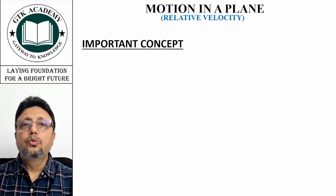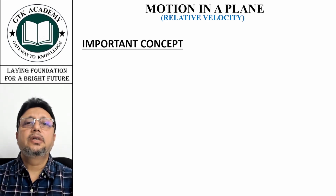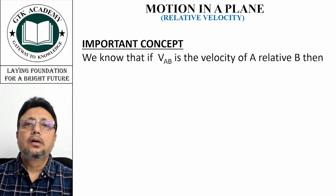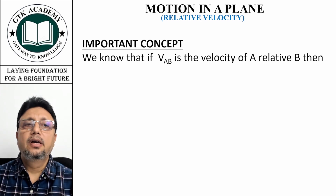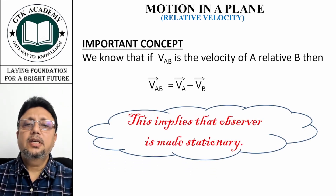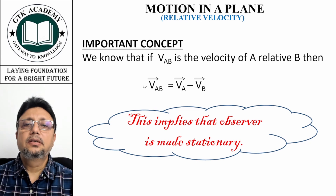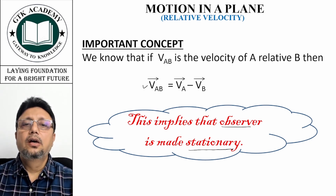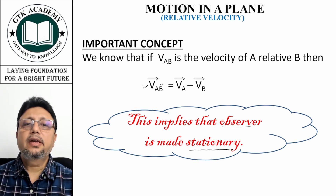We have one or two very important concepts here which I am going to discuss one by one. One concept is: VAB is the velocity of A relative to B and VAB equals VA minus VB. This implies that the observer is made stationary. I have already told who the observer is — since it is velocity of A relative to B, B is the observer.